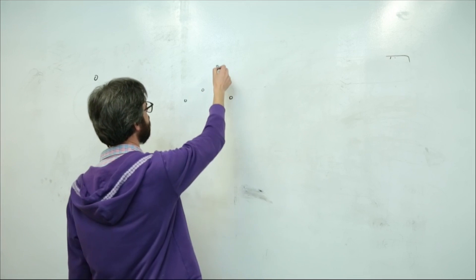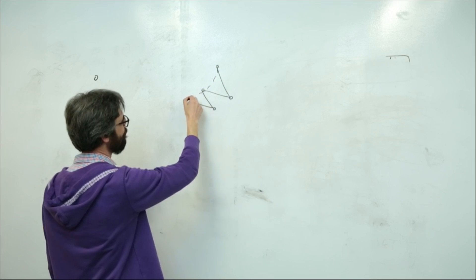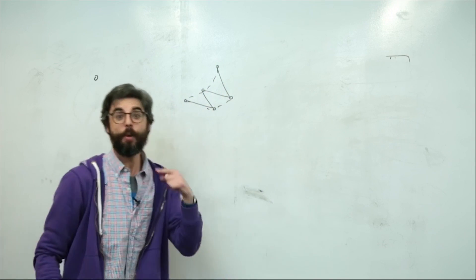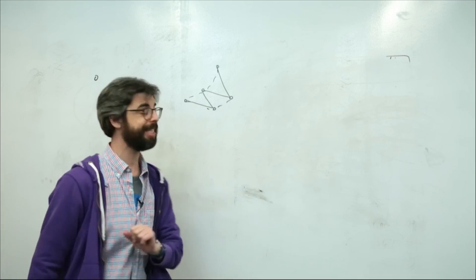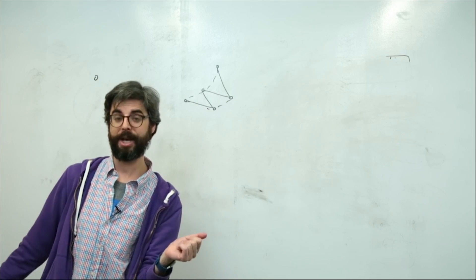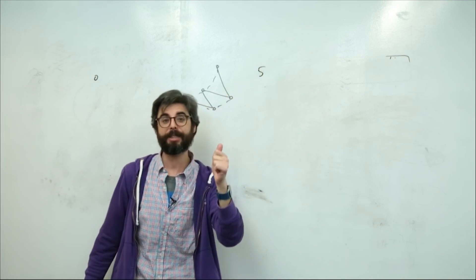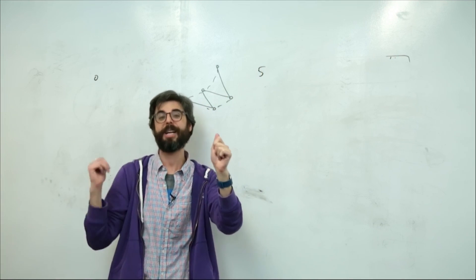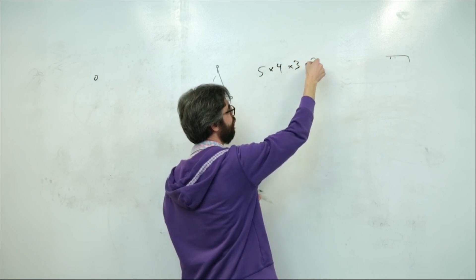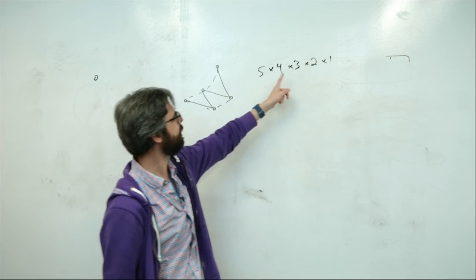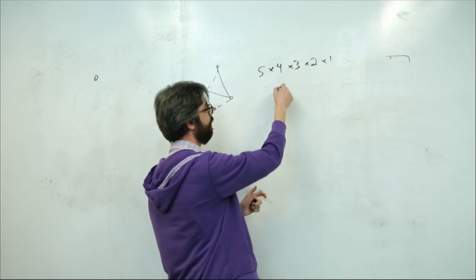I might be able to eyeball this and say, okay, maybe that's the path. The point is, we could have a computer algorithm figure this out — let's just check every single possibility. First, let's pick a city. There are five possibilities. Once I pick one, there are four left, then three, then two, then one. So that's five factorial: 5 × 4 × 3 × 2 × 1 = 120 possibilities for five cities.